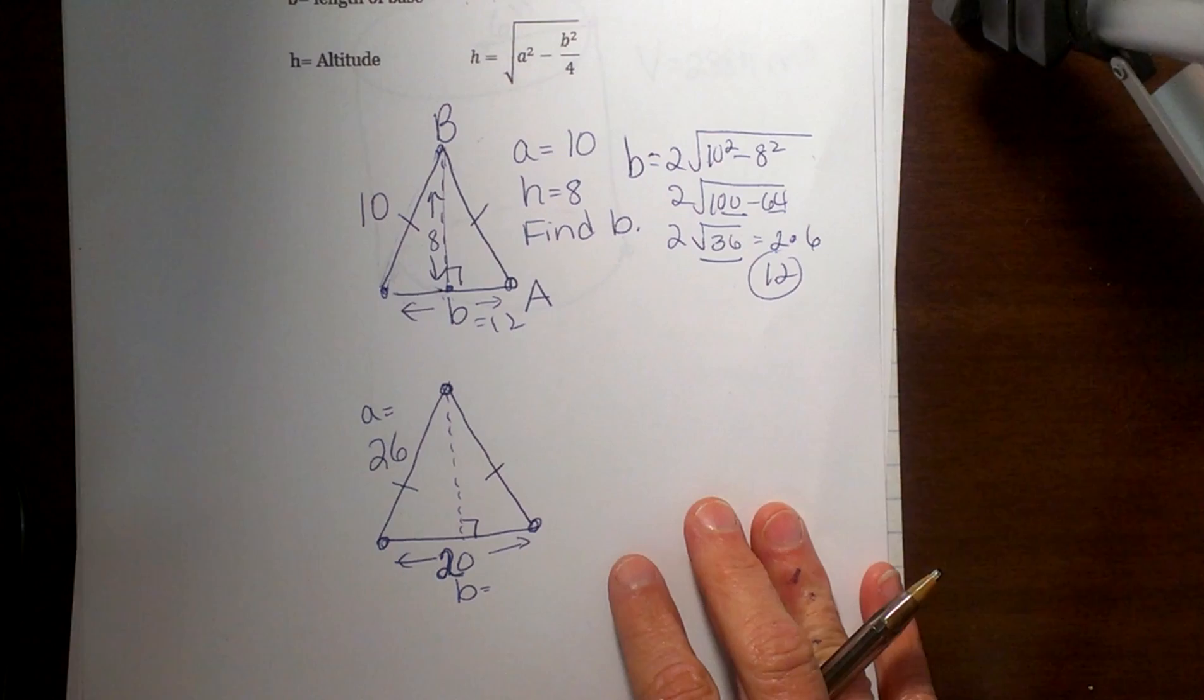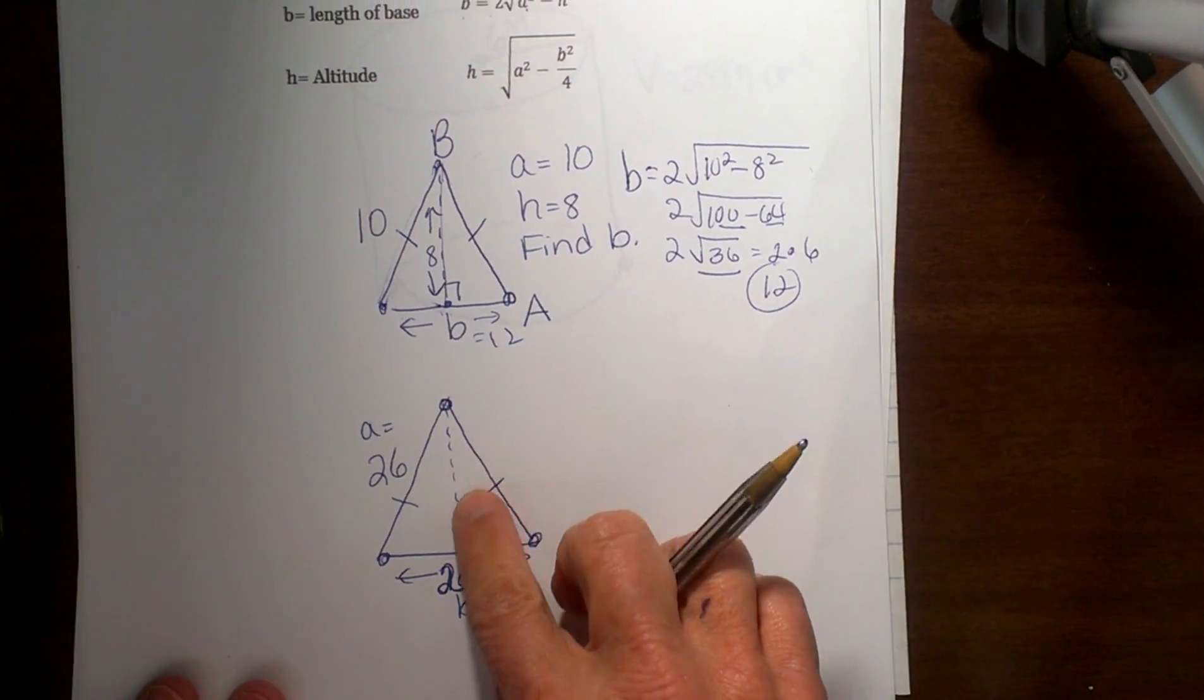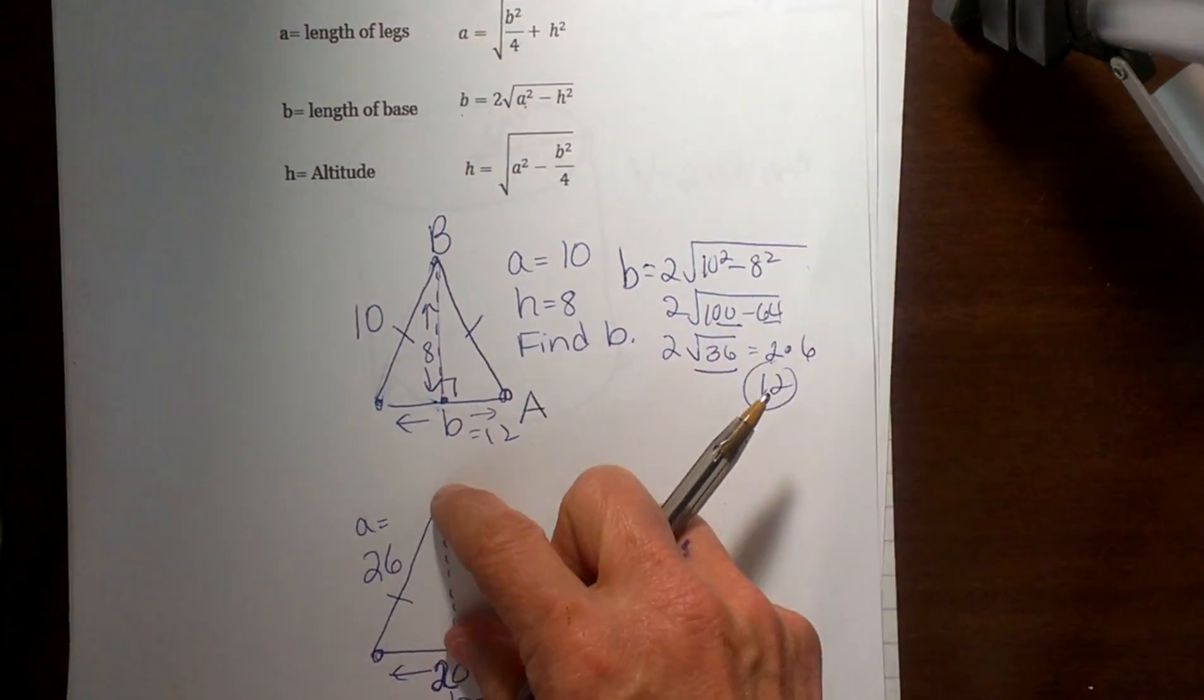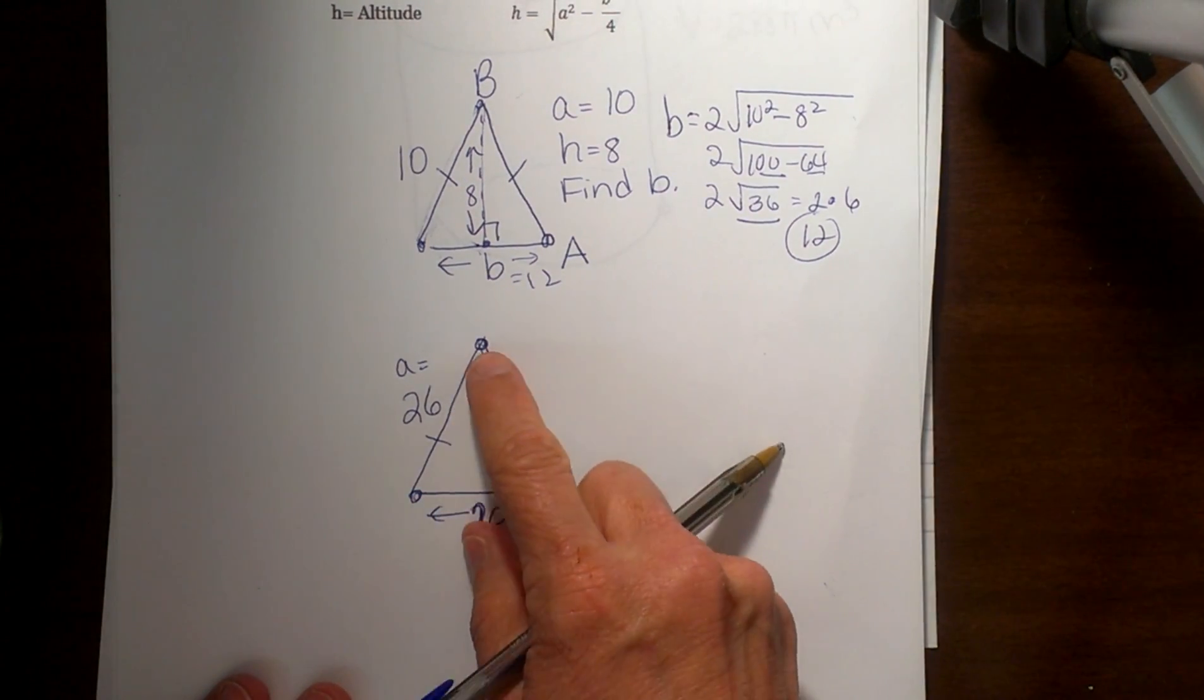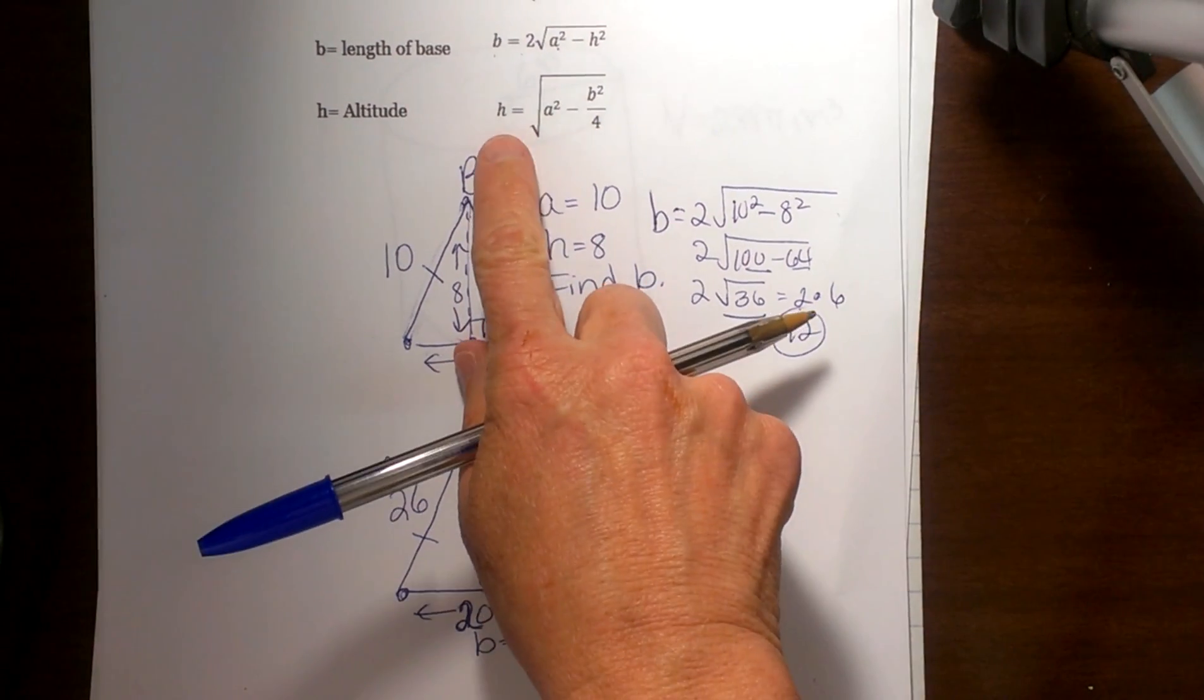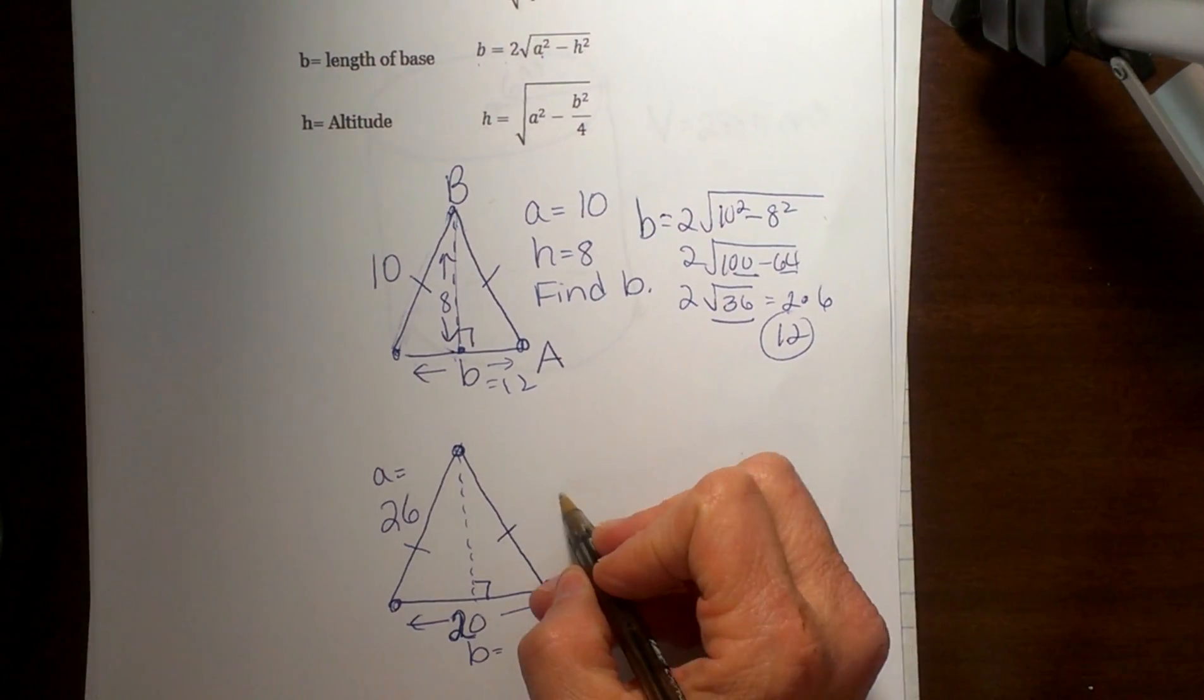Let's use our handy dandy formula to find the height this time. So we are going to use this for the height. To find this height given the base and one of the legs, and we know those legs are congruent, we are going to take the height as equal to the square root of a...